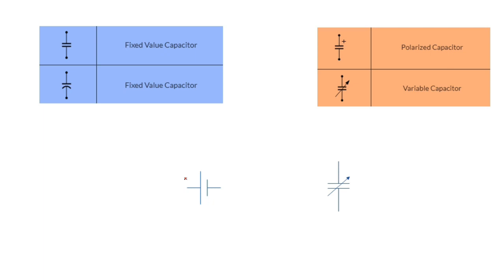Here we have some capacitors. In blue color we have some fixed capacitors — these are fixed value capacitors, we can call them non-polarized capacitors. These two capacitors don't have a plus or minus sign, so they are not polarized capacitors.